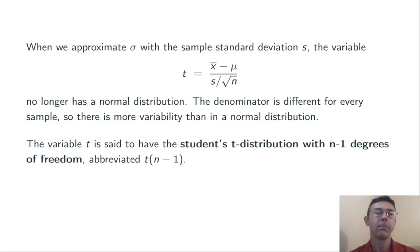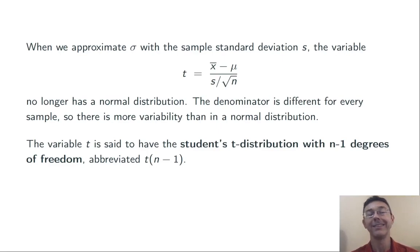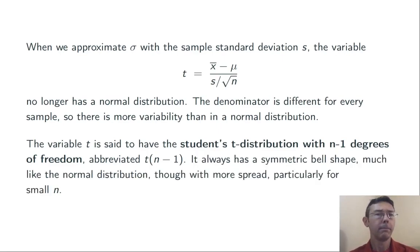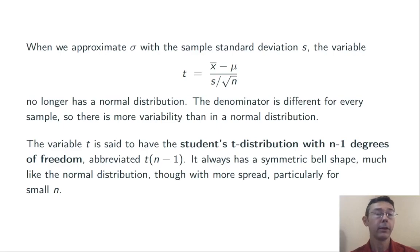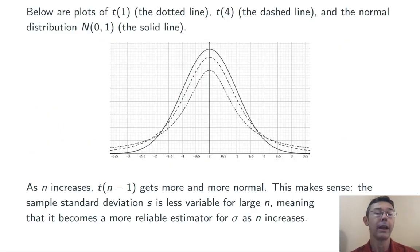We say that the variable t has the Student's t-distribution with n minus 1 degrees of freedom, sometimes just called the t-distribution, abbreviated t(n−1). It always looks about the same, though it is slightly different for different sample sizes n. In particular, it's always symmetric and has a roughly bell shape. Larger values of n give slightly less spread; smaller values of n give slightly more spread.